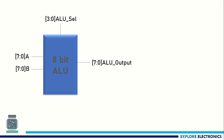Here you can see the block diagram of the 8-bit ALU. Since it is an 8-bit ALU, this device performs operations on 8-bit values. Inputs A and B are 8 bits each — A is a vector [7:0] and B is also [7:0] — and the output is also taken as 8 bits, [7:0], as the ALU output.